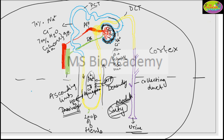When the filtrate moves up to the distal convoluted tubule, reabsorption of sodium and chloride ions takes place. Then it moves to the collecting duct, where different distal convoluted tubules discharge their filtrate. In the collecting duct, waste products from surrounding blood capillaries — such as hydrogen ions and ammonium ions — are secreted into the duct. Anything going inside the tubule is secretion; anything coming out is reabsorption.